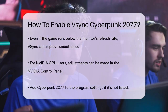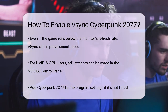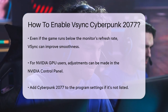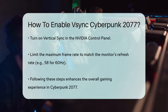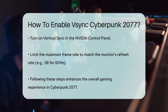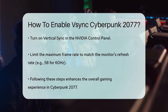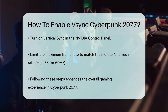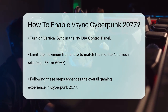If you're using an NVIDIA GPU, there's another way to handle this through the NVIDIA Control Panel. Here, you can manage 3D settings specifically for Cyberpunk 2077. Add the game to the program settings if it's not already listed. Then turn on Vertical Sync and limit your maximum frame rate to match your monitor's refresh rate. For a 60Hz monitor, setting the max frame rate to 58 can help avoid any extra frames that might cause tearing.